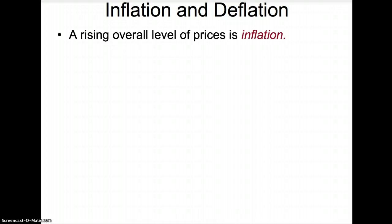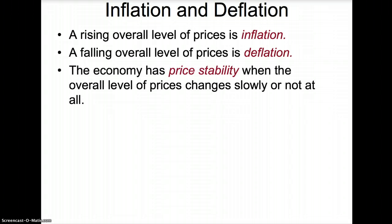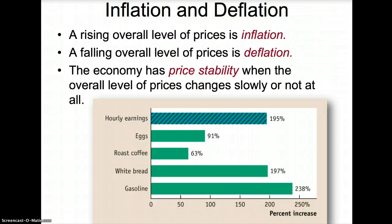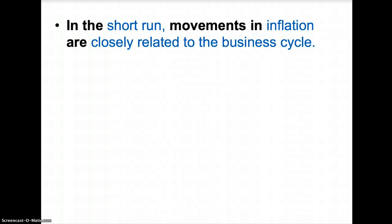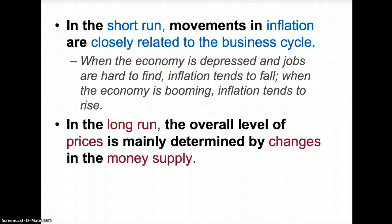Inflation and deflation: a rising overall level of prices is called inflation, and a falling overall level of prices is called deflation. The economy has price stability when the overall level of prices changes slowly or not at all. In the short run, movements in inflation are closely related to changes in the business cycle. When the economy is depressed and jobs are hard to find, inflation tends to fall. When the economy is booming and spending increases, inflation tends to rise.